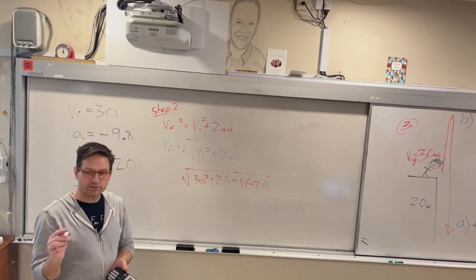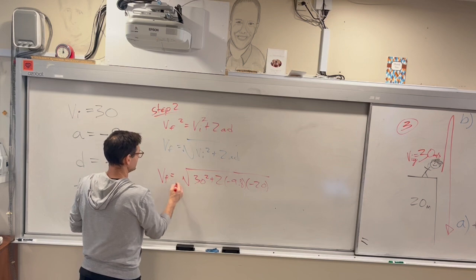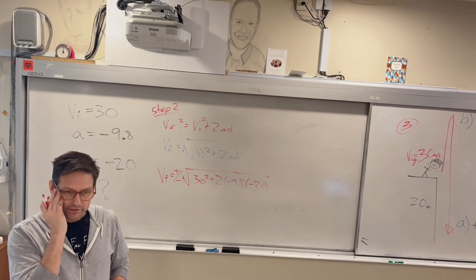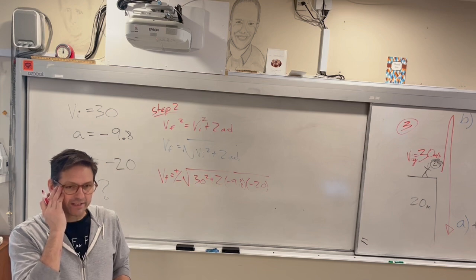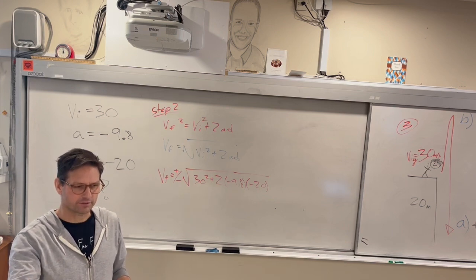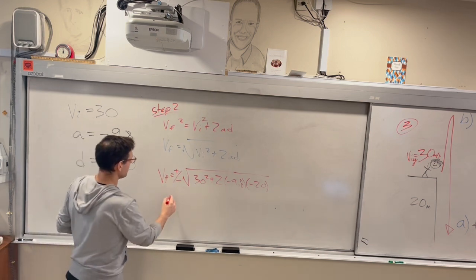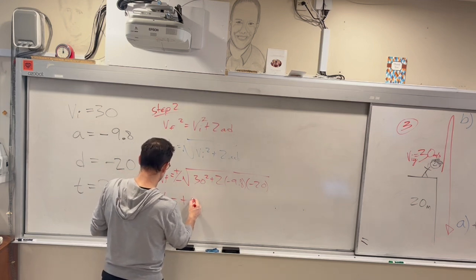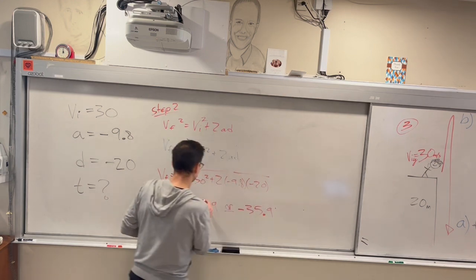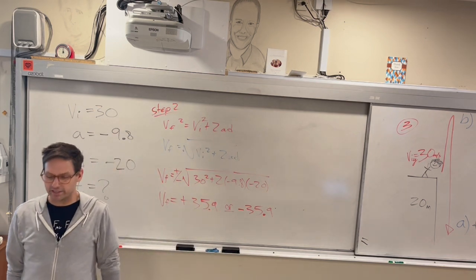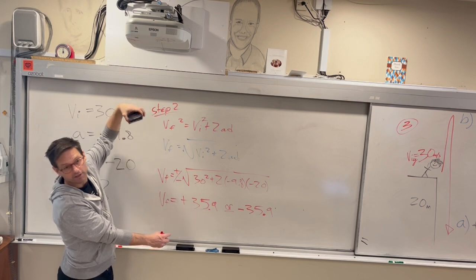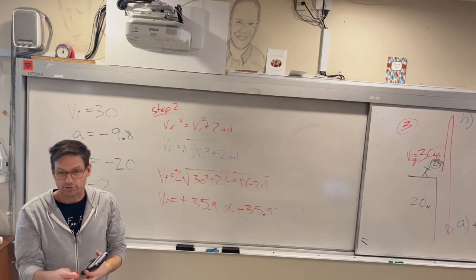Now, here's the key to this. Mathematically, this is actually positive or negative. Mario, what's the square root of 9? Good, because 3 times 3 is 9. What's negative 3 times negative 3? 9. So any square root can be positive or negative. So we're going to say this is positive 35.9 or negative 35.9. Jordan? How can we have a positive velocity and a negative velocity? Because it's going down. Good. So on the way up, it's positive 36, on the way down, it's negative 36.